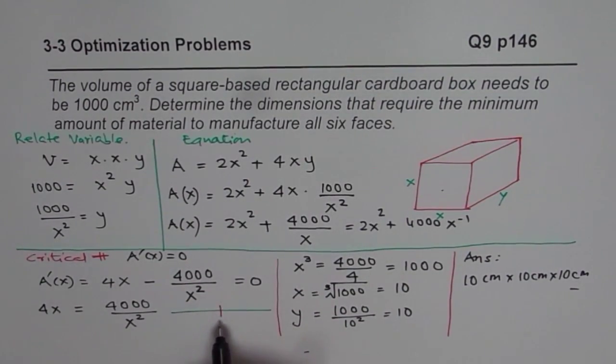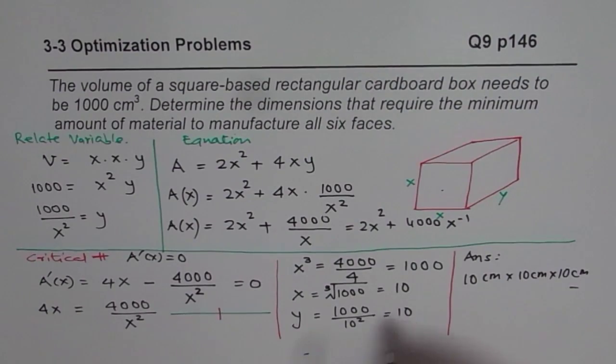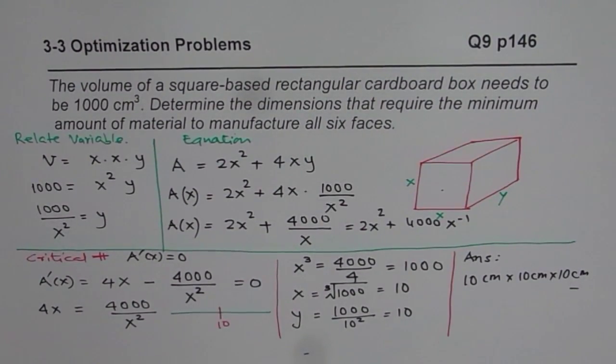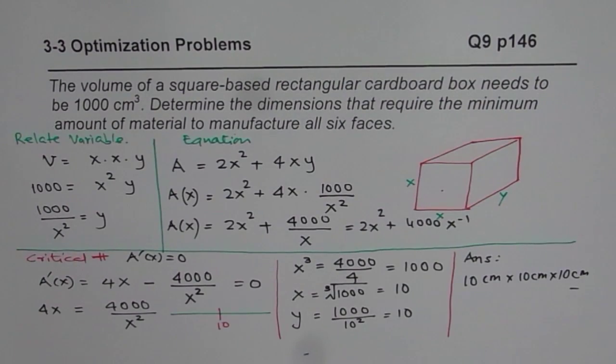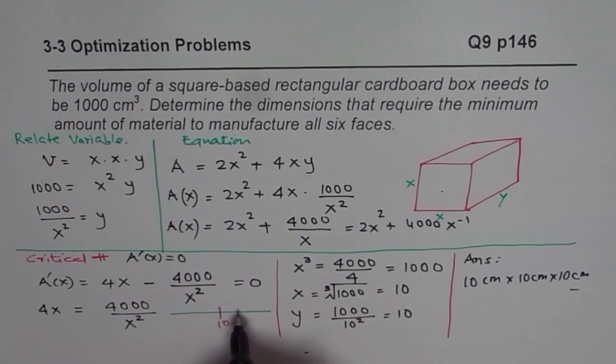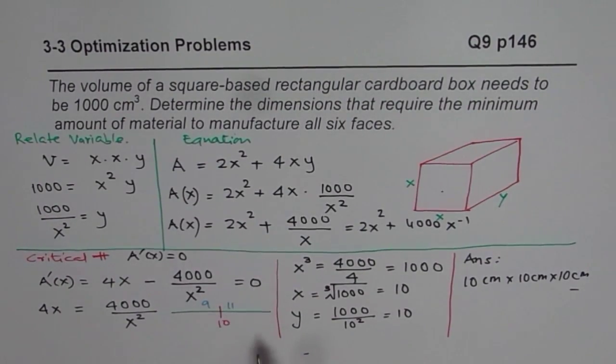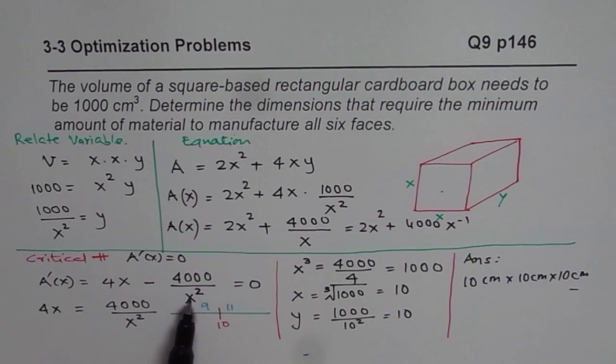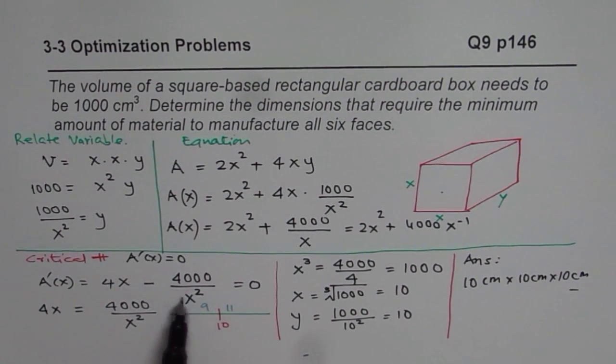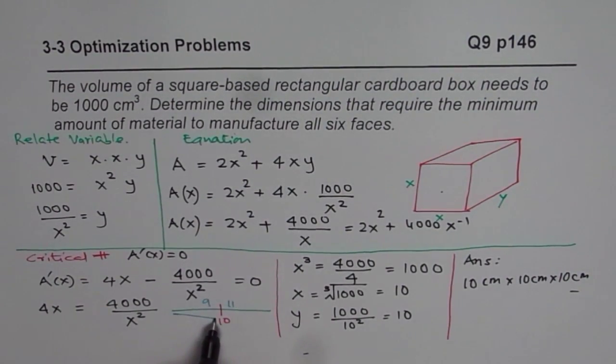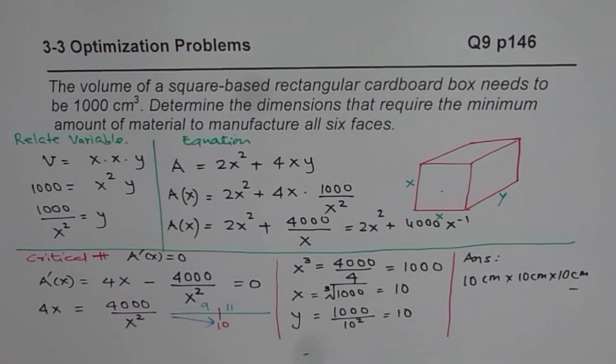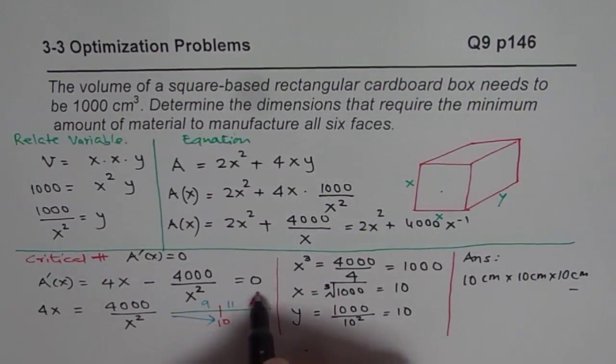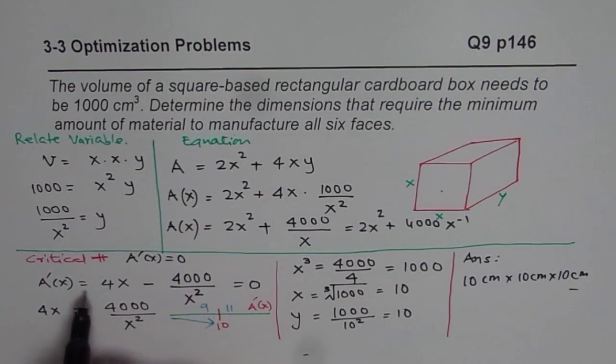So we will check on either side of the critical number, which in our case is 10. So what we can do is we can take a test point, one less than 10 and one more than 10. Let's say 9 and 11 could be our test points. If I substitute 9 here, in that case, what do I get? If I substitute 9, I get 4 times 9 minus 4000 divided by 9. It is going to be negative number. So in this case, the change in area, what we are trying to analyze here is change in area.